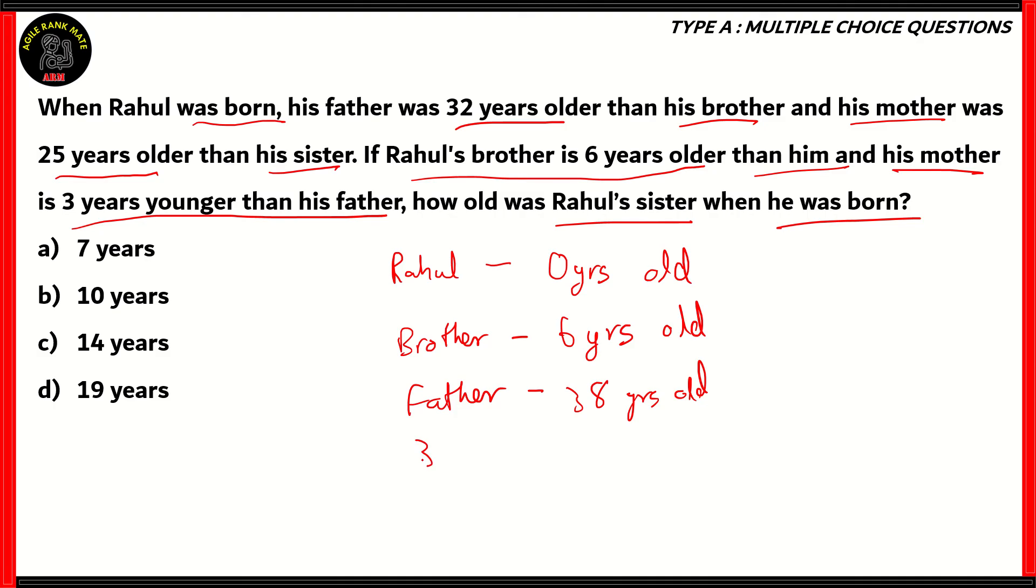Now, what about his mother? His mother was 3 years younger than his father, and still is 3 years younger than his father. So therefore, from the age that Rahul's father was then, we can estimate his mother's age as well, which is 35.